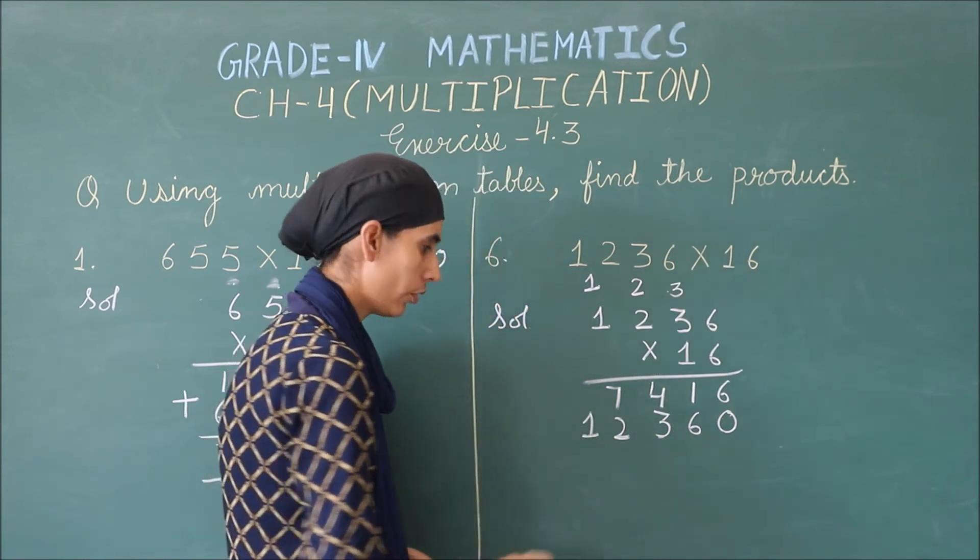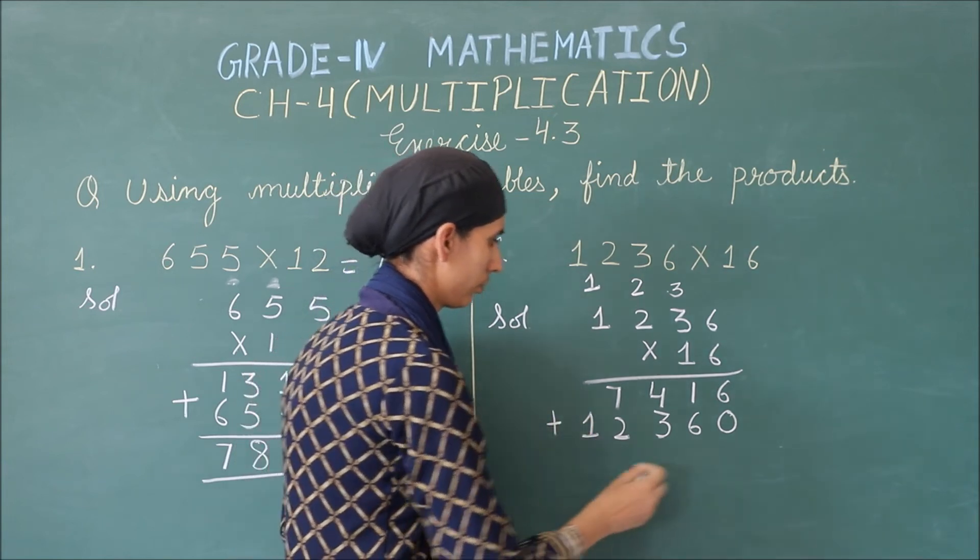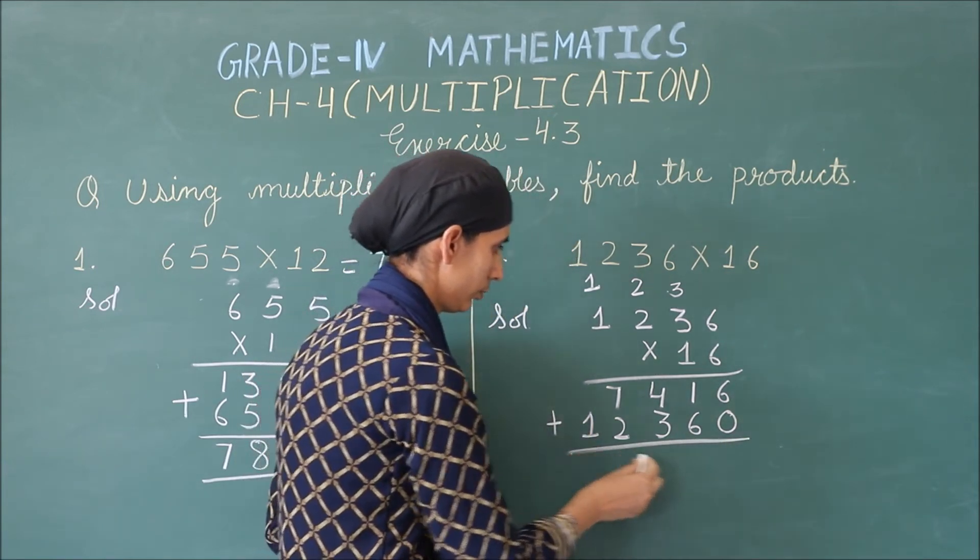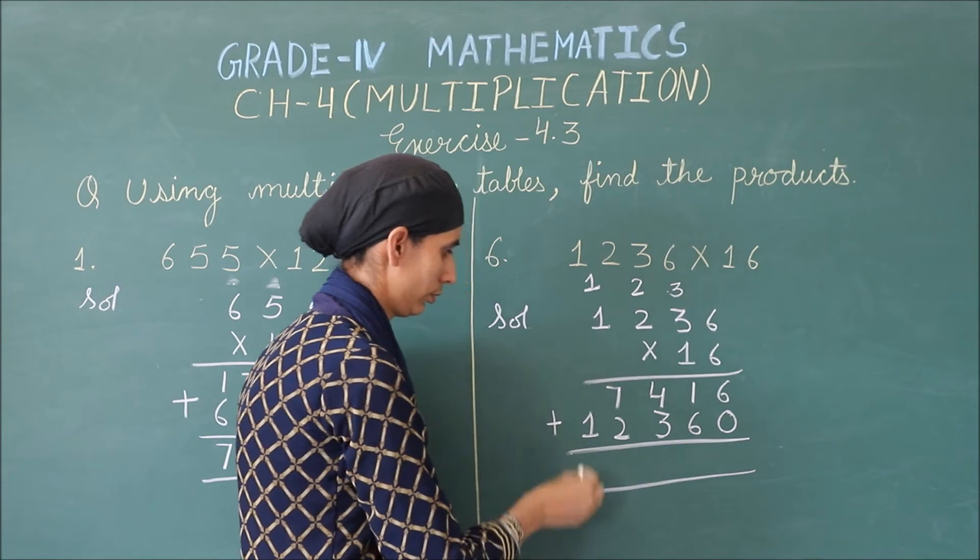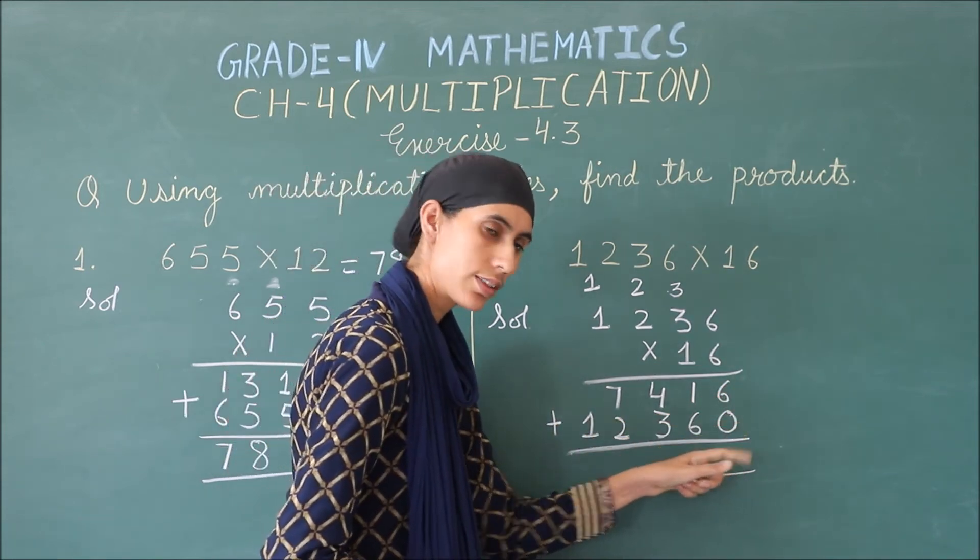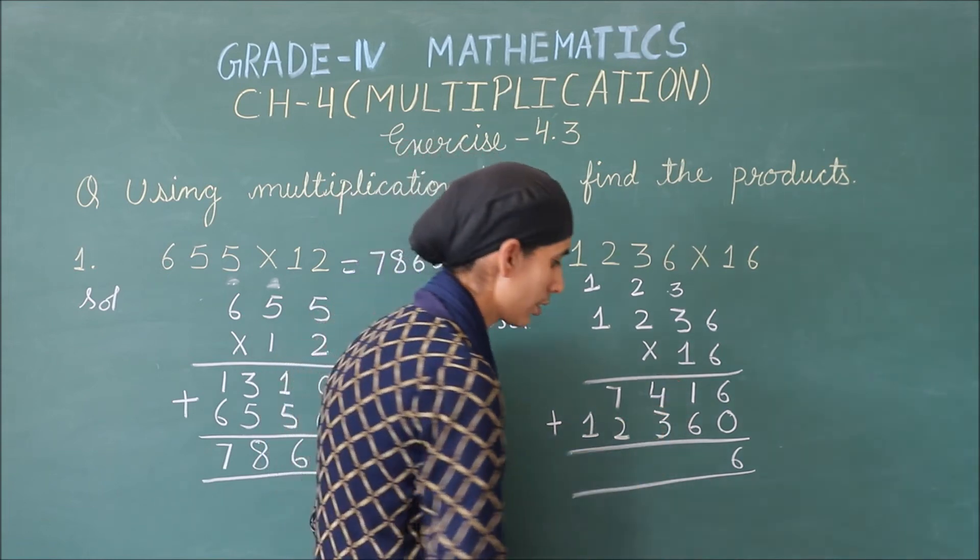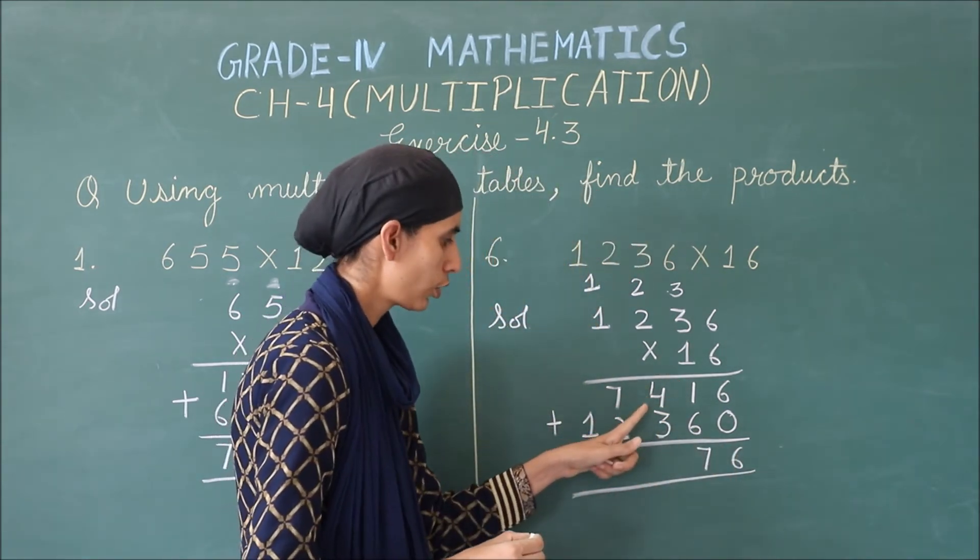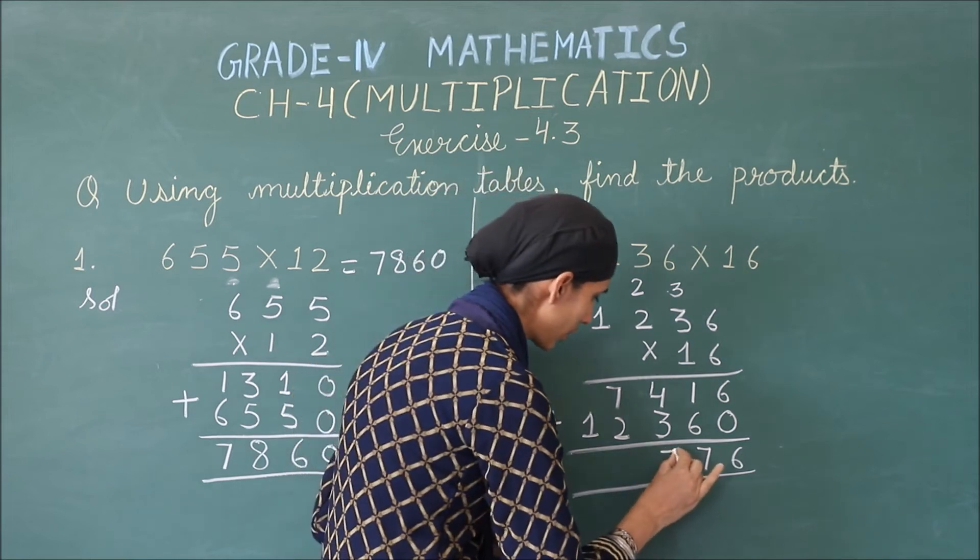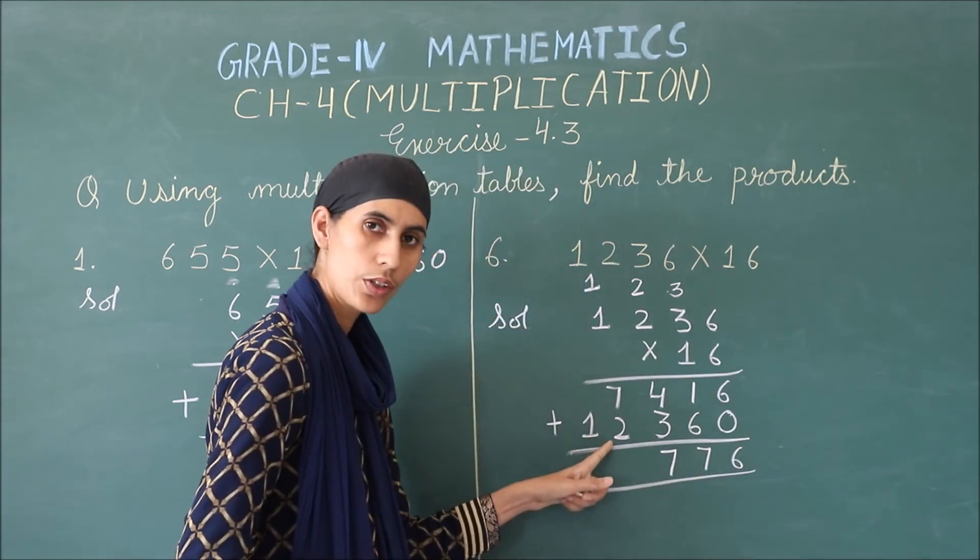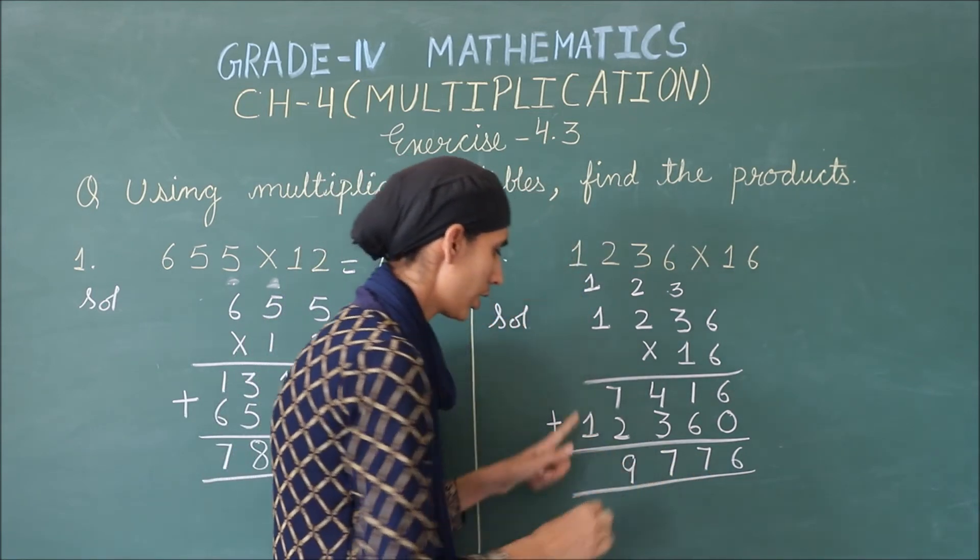Next step is addition. 6 plus 0 is 6. 6 plus 1 is 7. 4 plus 3 is again 7. 7 plus 2 is 9.